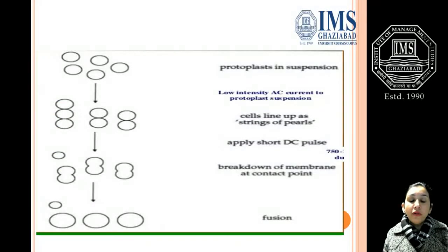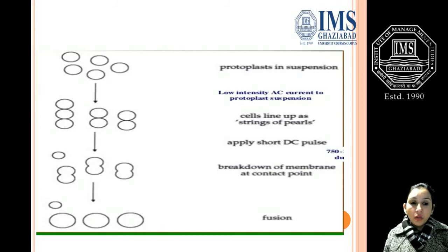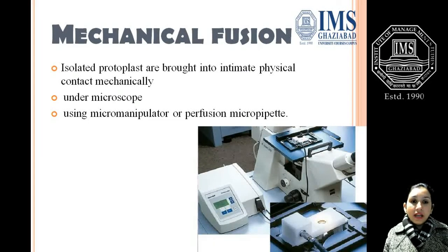This flow diagram shows protoplast fusion by electric field. The circles represent the protoplasts. When electric current is applied, the protoplasts align themselves in the form of a pulse. When short DC pulses are applied, the membrane between the two protoplasts breaks down and we get the fused product.